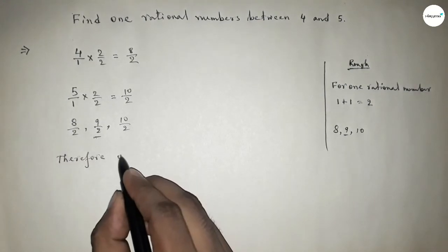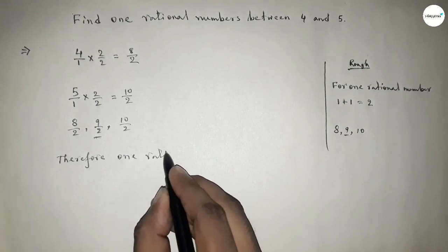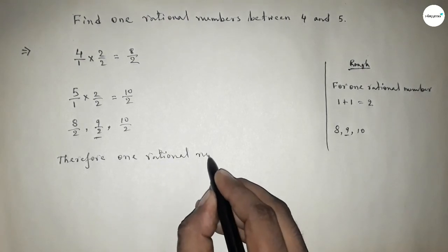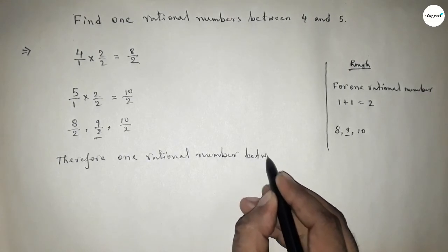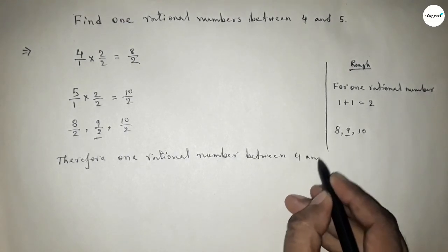Therefore, one rational number between 4 and 5 is 9/2, and this is the process to find out one rational number between 4 and 5.